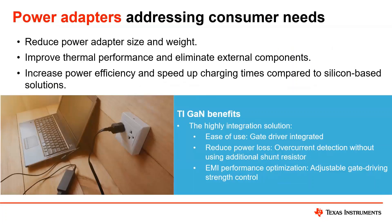A lot of these benefits for GAN directly translate into AC-DC adapters and power adapters that you're seeing in the market today. When you're thinking about a phone charger, you want it to be small and lightweight, and even if it's a high power one that can charge your laptop, you don't want it to be physically large. By improving the efficiency, we're also able to improve the thermal performance of the overall design. From TI's side, we look at integration as a key way to reduce the number of external components you need and make your overall system design easier.